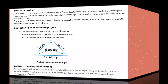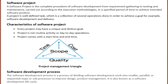A software project is the complete procedure of software development from requirement gathering to testing and maintenance, carried out according to execution methodologies in a specified period of time to achieve an intended software product. A project is a well-defined task which is a collection of several operations done in order to achieve a goal, for example software development and delivery.